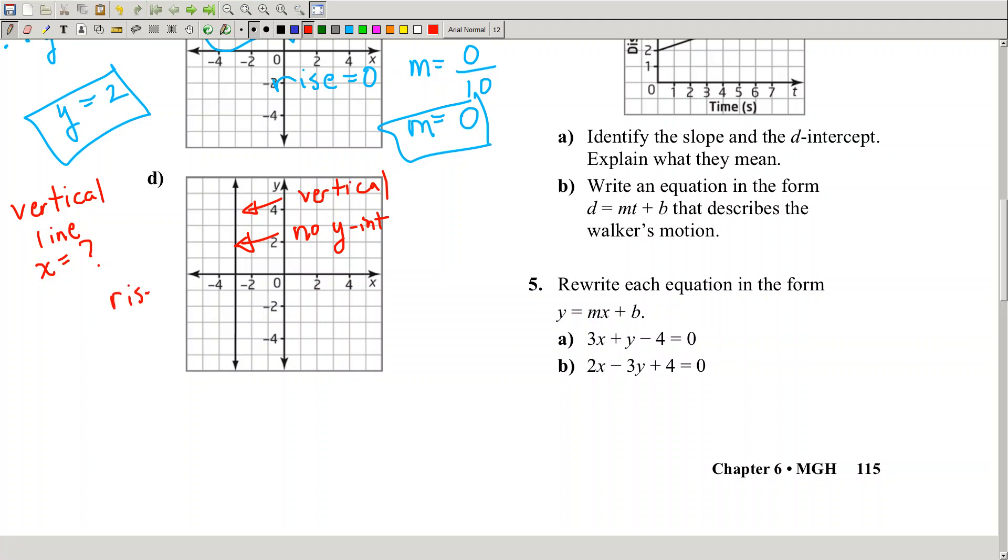If you calculate the slope, the rise is 10 and the run is non-existent, it's zero. So m is 10 over 0. 10 over 0 is undefined, there is no defined slope.